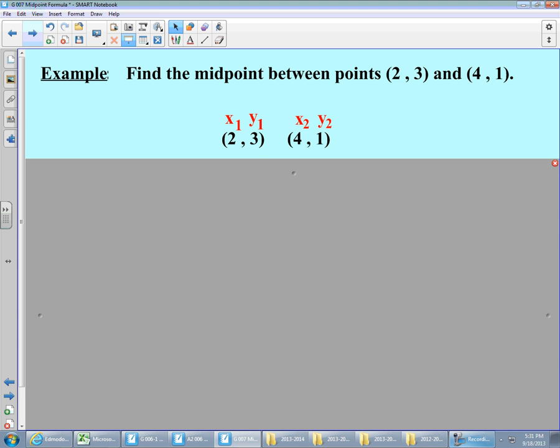They are labeled x1, y1, and x2, y2. Remember that each point, each ordered pair, gets an x and a y. So don't make the mistake of going x1, x2, and then y1, y2. So we're going to do this every single time we have a midpoint formula. We're going to label our points, x1, y1, x2, y2.